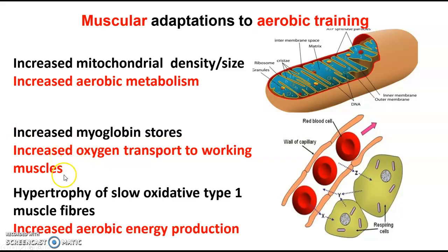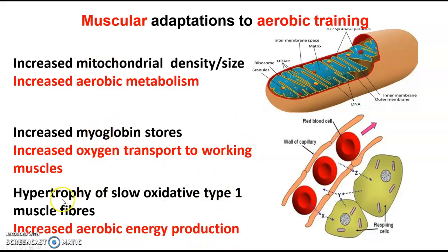The final muscular adaptation is hypertrophy of slow oxidative type 1 fibres. If we can get an increase in size of the muscle fibres that allow us to work aerobically, that means we can increase aerobic energy production. So our key adaptations are: mitochondrial density, myoglobin, and hypertrophy of slow oxidative type 1 fibres.